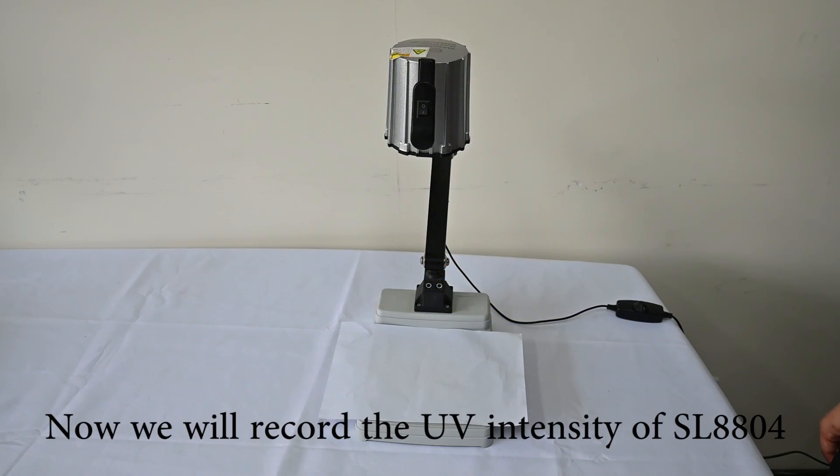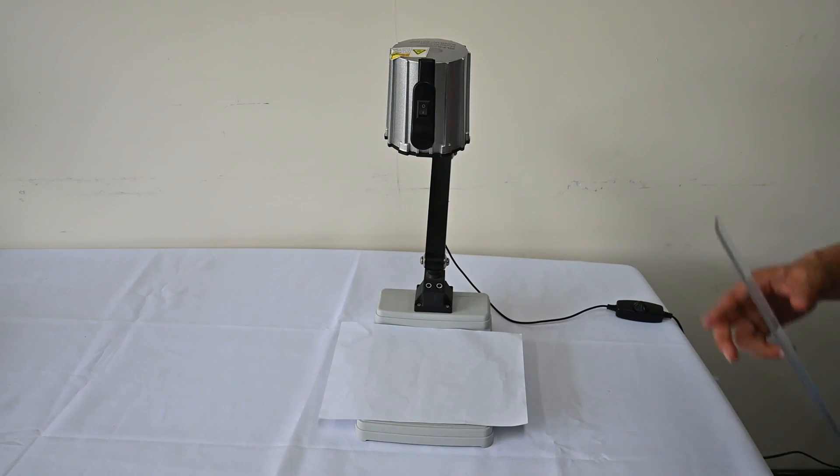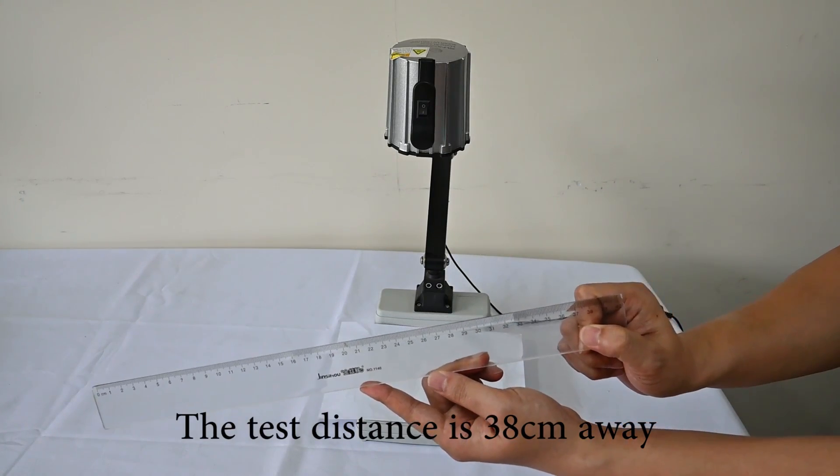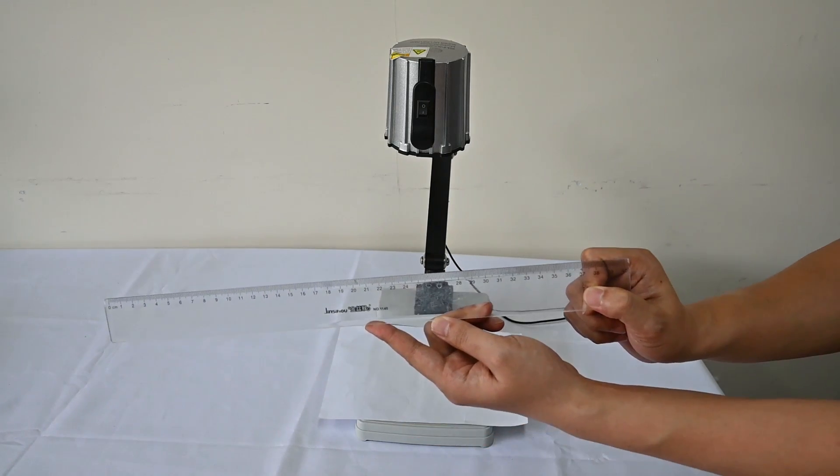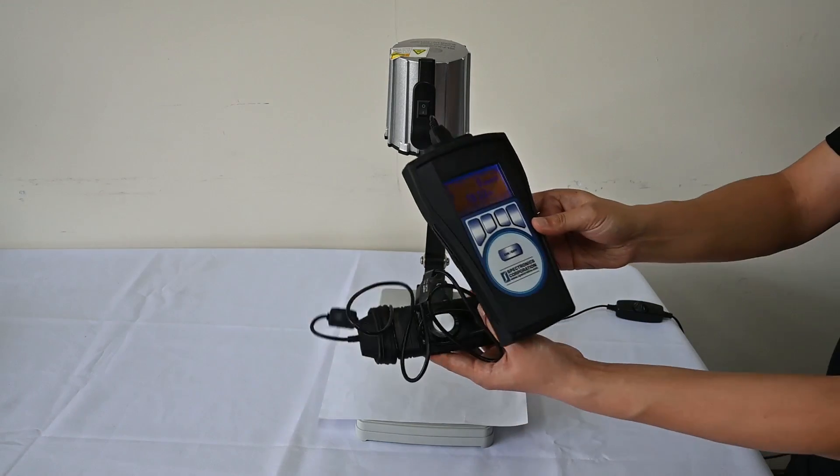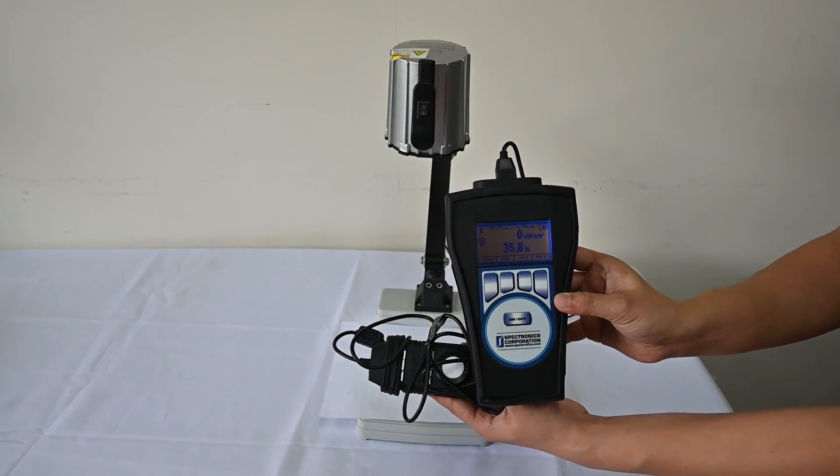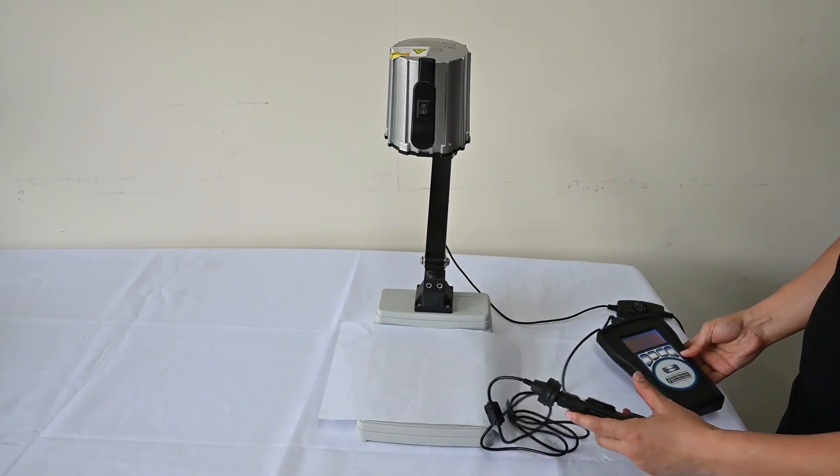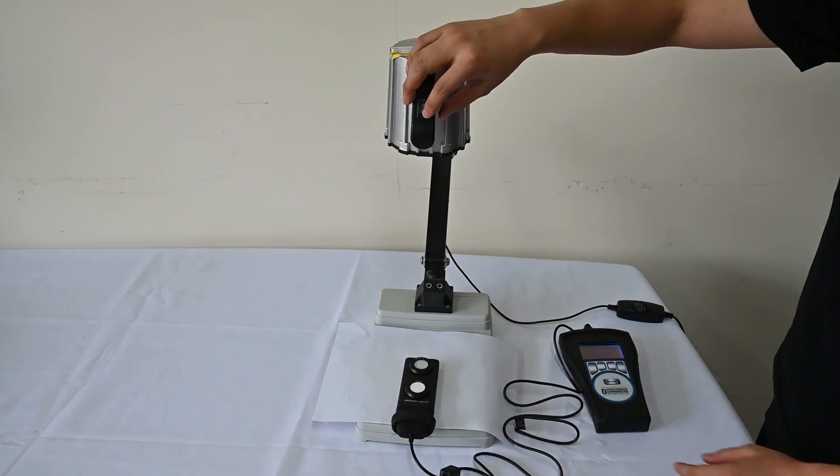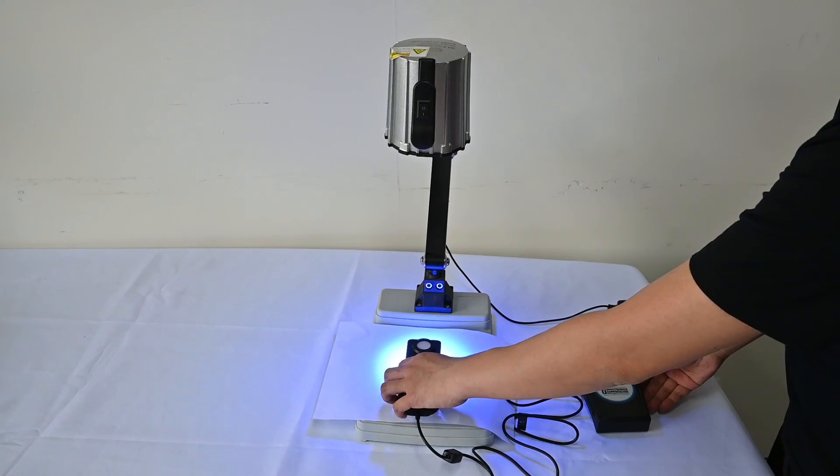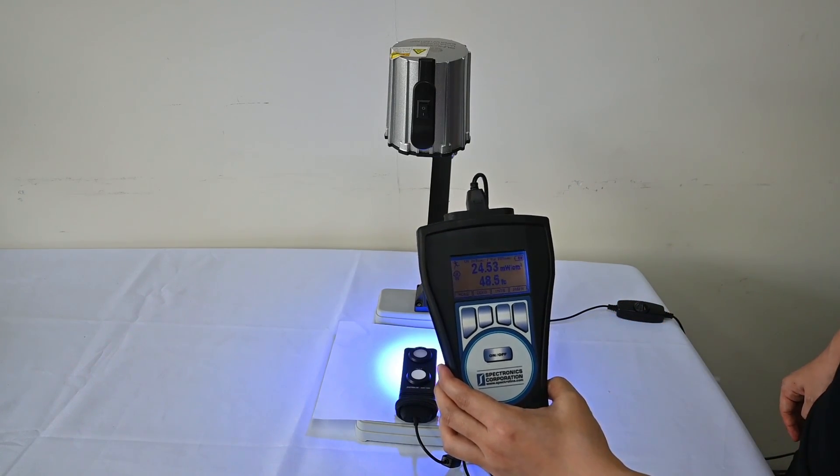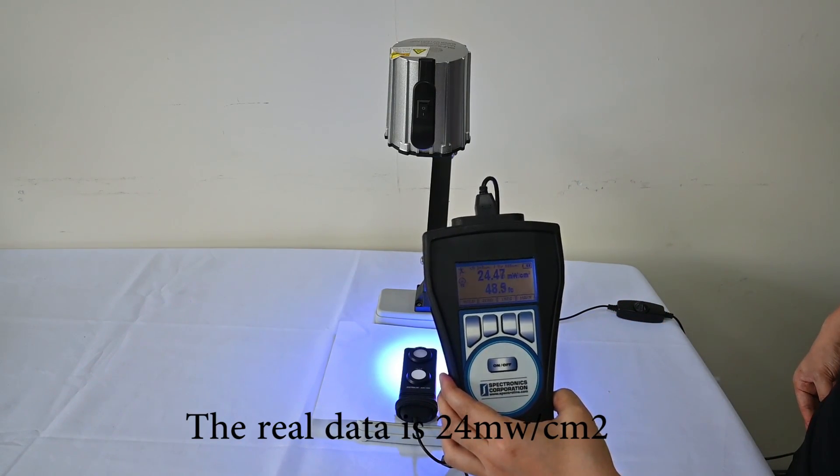Now we will measure the UV intensity of the SL-W804. You can see the test distance is 38 centimeters away. To ensure accuracy, we use SPAC 20 millimeter spacing. OK, here we go. You see, the actual data is 24 milliwatts per square centimeter.